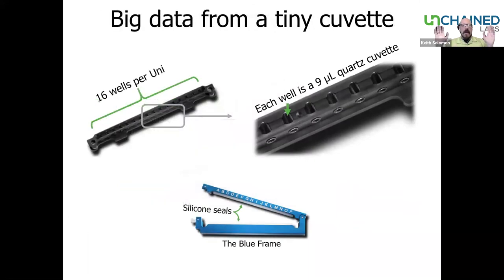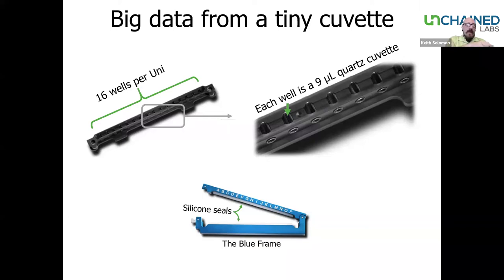One of the things that makes the UNCLE such a powerful instrument is the design of a proprietary sample holder called the UNI — an array of 16 optical-grade quartz cuvettes in an anodized metal frame. Each cuvette takes exactly 8.8 microliters and is open on the top and bottom so any gas evolves to the surface and disappears. Once filled, they're sealed between silicon gaskets, allowing long-term stress analyses up to three months. The UNI sits right on top of the Peltier element, allowing efficient heat transfer during thermal ramps.